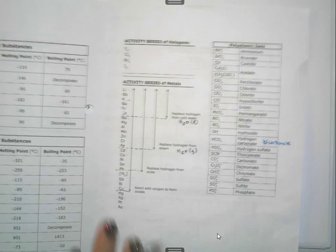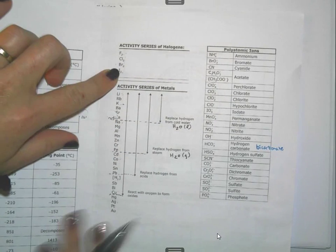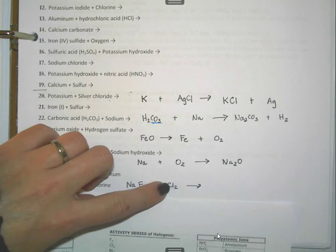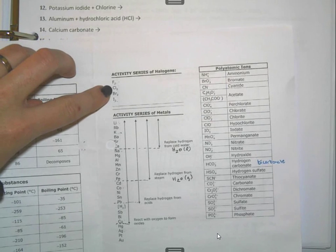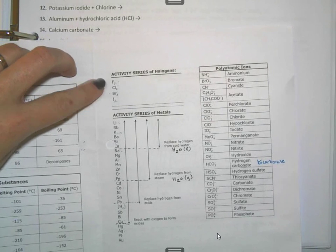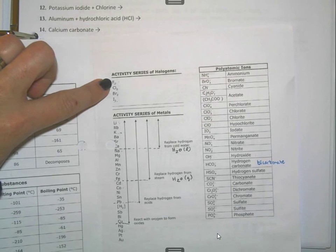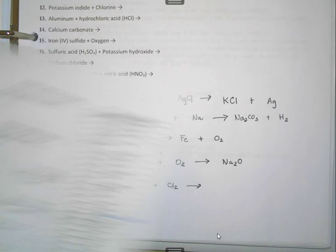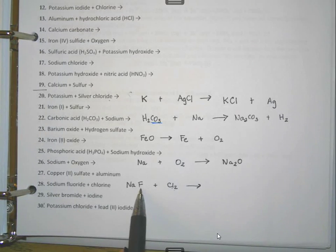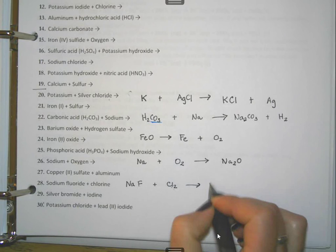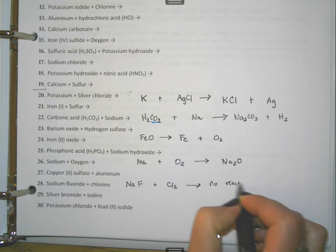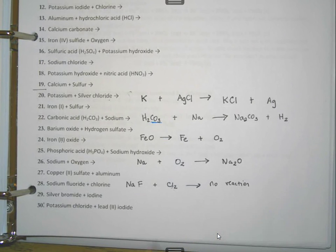Looking at the halogens on the activity series, we have fluorine and chlorine. Fluorine is the most reactive, chlorine is less reactive. The most reactive gets to be in the compound, so fluorine takes the compound. Fluorine is already in the compound, which means chlorine cannot come in and take its place. So we write no reaction — this doesn't take place. That is our proper answer.